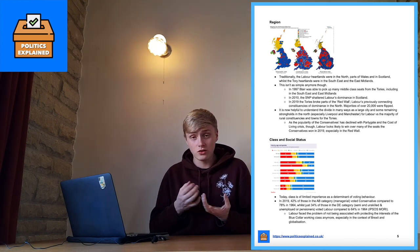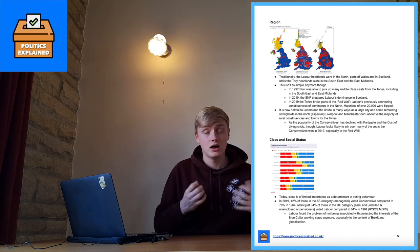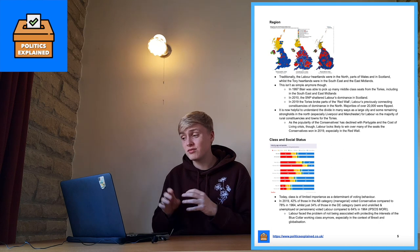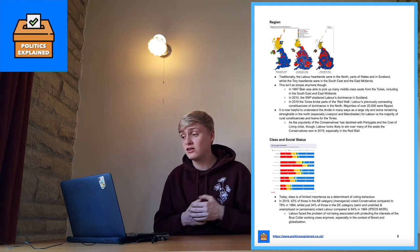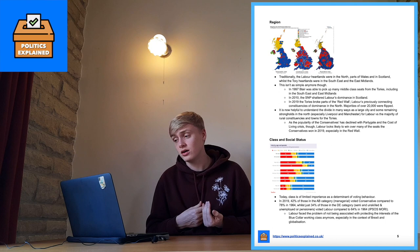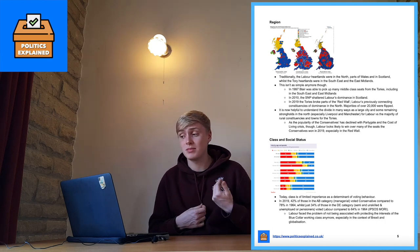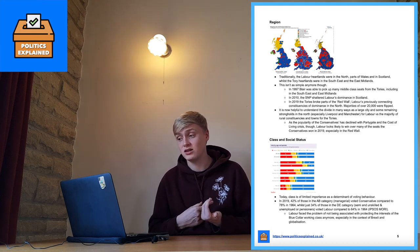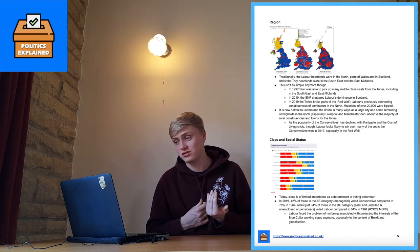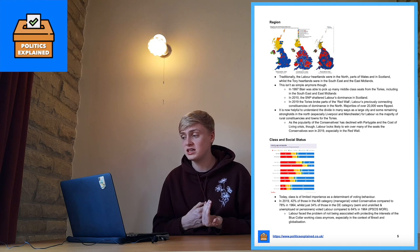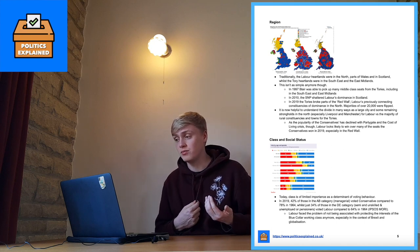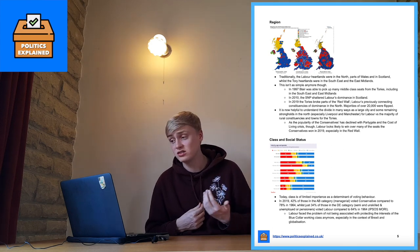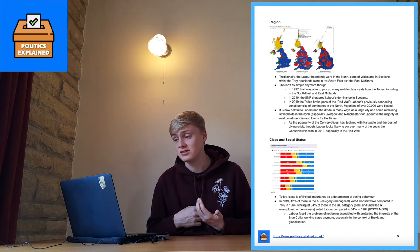Class and social status today: it's of limited importance as a determinant of voting behaviour. In 2019, 42% in the AB category — managerial voters — voted Conservative, compared to 78% in 1964, showing the declining importance. Whilst 34% of those in the DE category — semi and unskilled workers, unemployed, or pensioners — voted Labour, compared to 64% in 1964. In 2019, Labour faced a problem of not being associated with protecting the interests of blue-collar working classes, especially in the context of Brexit and globalisation.